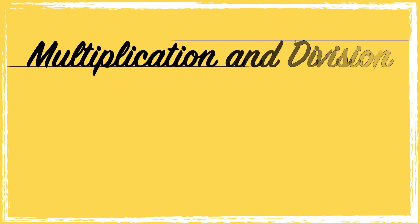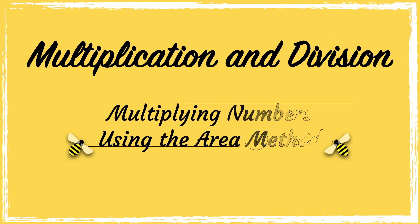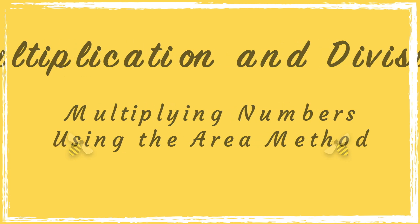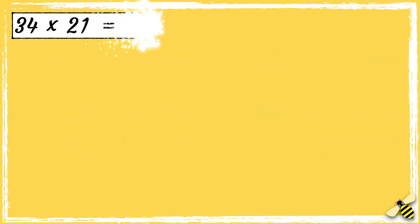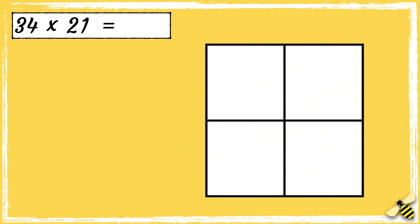In this video, we're going to look at using the area method to multiply numbers. Here is a number sentence: 34 times 21. The first thing we need to do is draw our box. As we're multiplying two two-digit numbers, we need a box that has two down and two across.